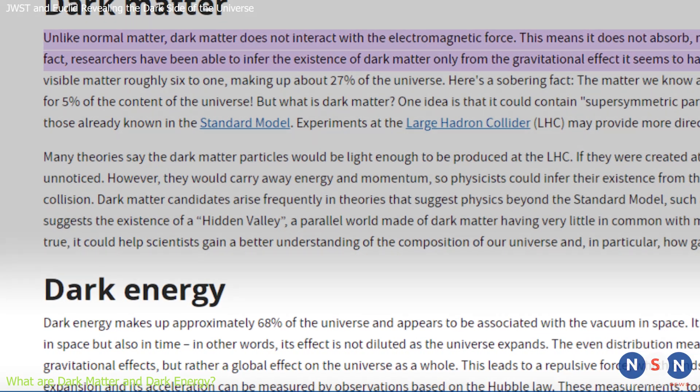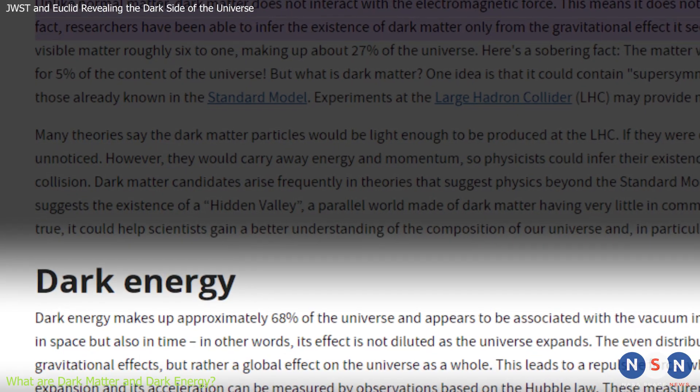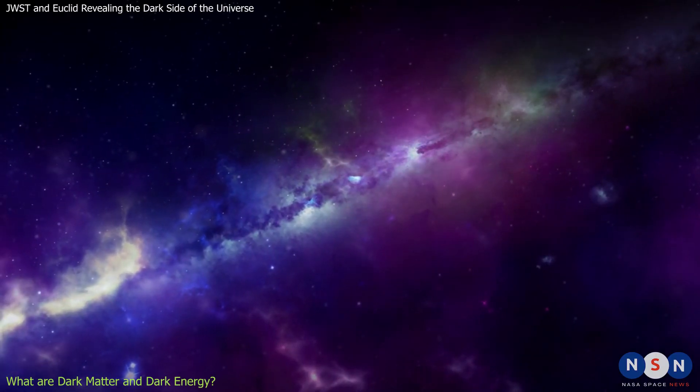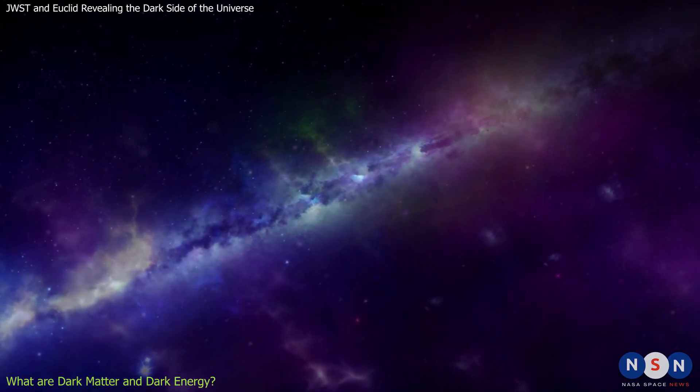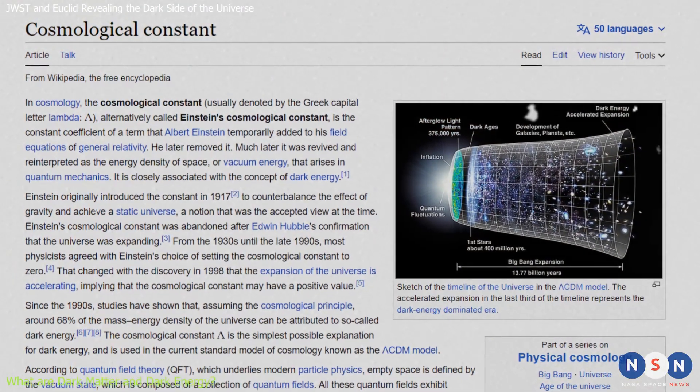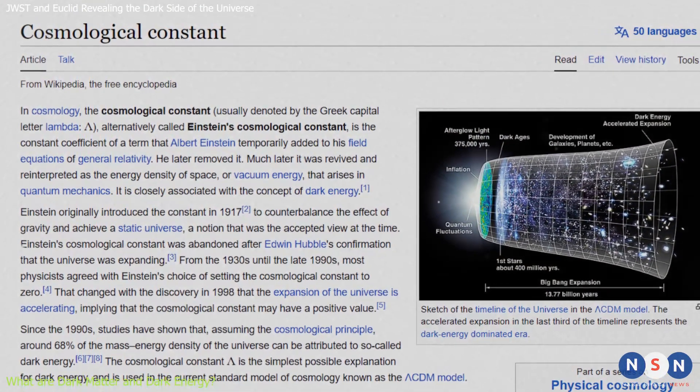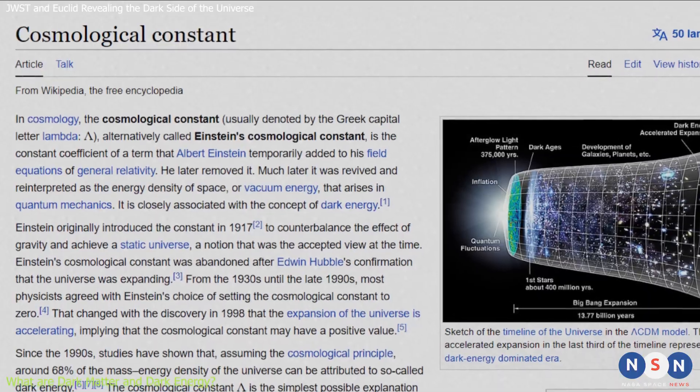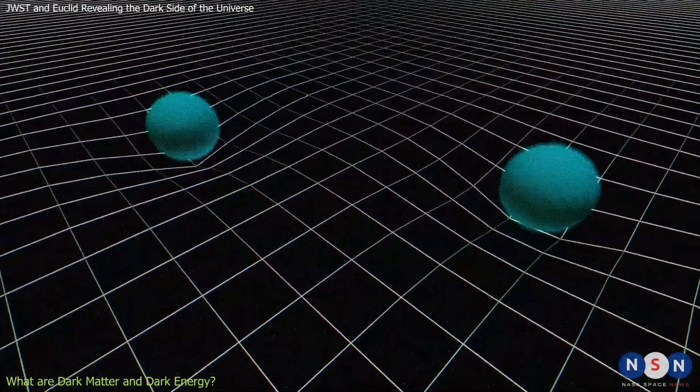Scientists think that dark energy makes up about 68% of the universe, but they don't know what it is or how it works. Some possible explanations are a cosmological constant, a form of energy inherent to space itself, or a modification of Einstein's theory of gravity.